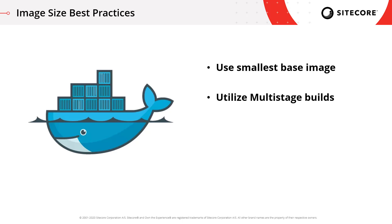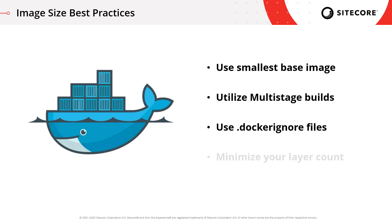Next up, you should be making use of Docker ignore files. These work in a very similar way to Git ignore files — they basically tell Docker not to copy any of these files into a container, again helping you to cut down on the image size. Finally, you want to minimize your layer count. Introducing each new layer includes a small overhead, so you want to try and condense down the number of layers as much as you can where it makes sense.